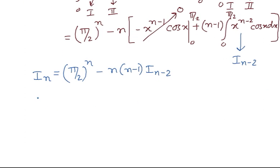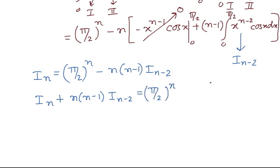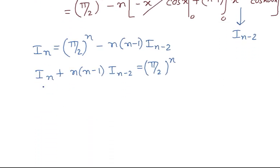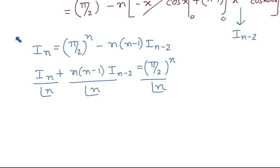So the reduction formula is: I_n plus n(n-1) I_{n-2} equals (π/2)^n. Now, going back to the problem, we need the summation of I_n / n! plus I_{n-2} / (n-2)!. We can divide both sides by n!, and notice that the factor n(n-1) in the reduction formula will cancel with the n! to produce (n-2)!.